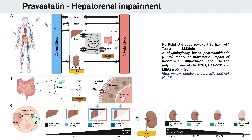A big application field is modeling disease. This is important because the people we're interested in are often old and have a lot of comorbidities. We're interested in certain subsets and how certain diseases are affecting pharmacokinetics and also liver function tests. In this example, we developed a model of pravastatin, which is a statin used for lowering blood cholesterol. We were interested in how hepatic impairment in the form of cirrhosis of different degrees and renal impairment in the form of different glomerular filtration rates affects the pharmacokinetics of pravastatin.